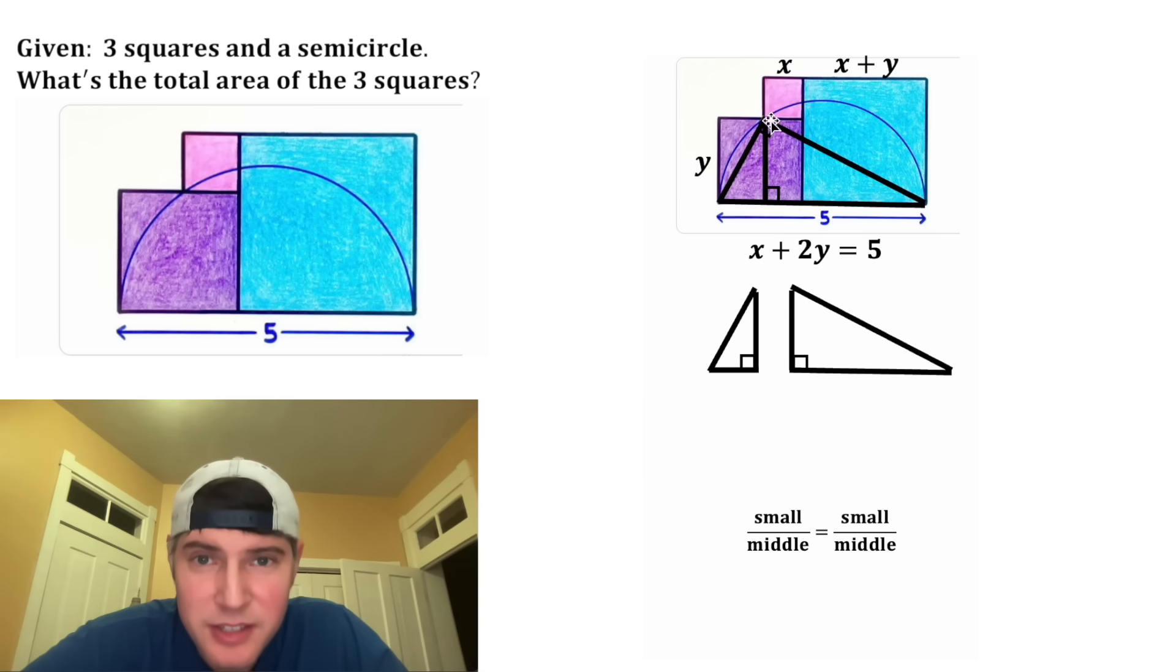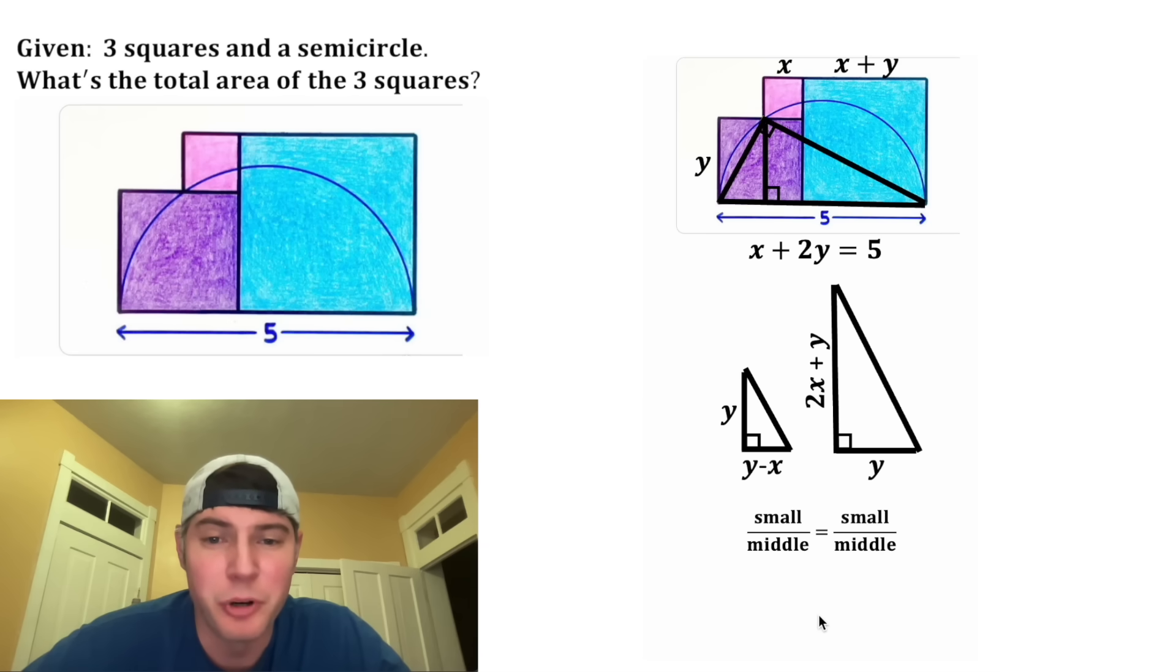So the height of both of these is this piece right here, and that's equal to Y. And then the base of this triangle is this piece right here, it's going to be equal to Y minus X. And that's because it's the whole length Y minus this piece X. And then this bottom is going to be equal to 2X plus Y, and that's because it's equal to this X plus Y plus this additional X right here. So now we're ready to fill out our proportion. The smaller side is Y minus X and the middle side is Y. And for this one the smaller side is Y and the middle side is 2X plus Y.